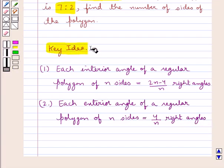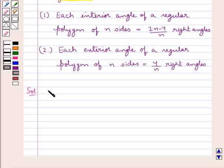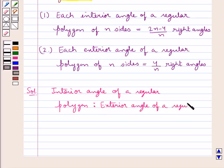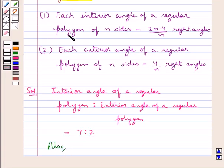Let's proceed with the solution now. According to the question, we have the ratio of the interior angle of a regular polygon to the exterior angle of a regular polygon, which is given as 7 to 2.